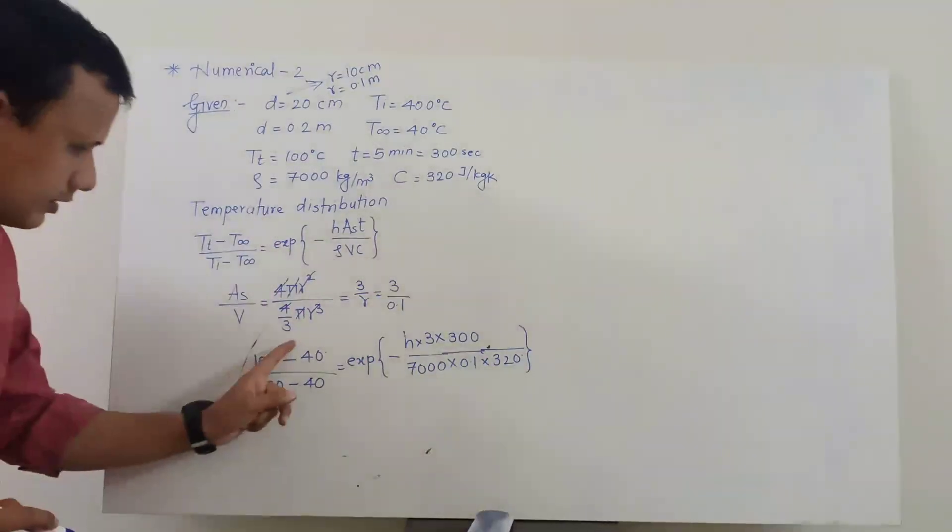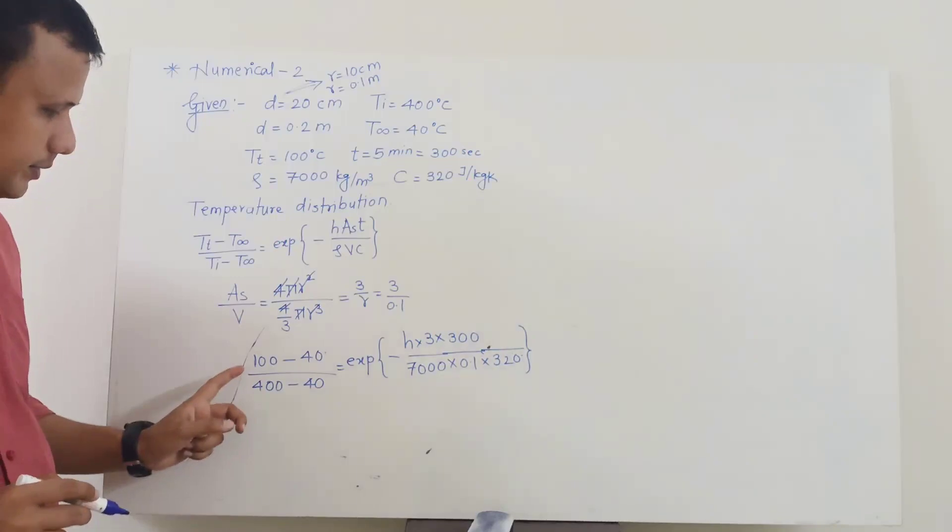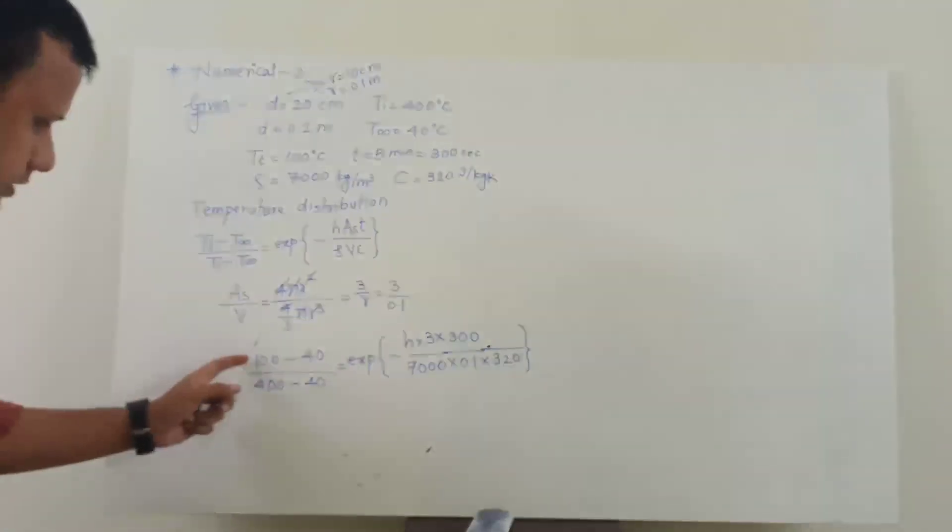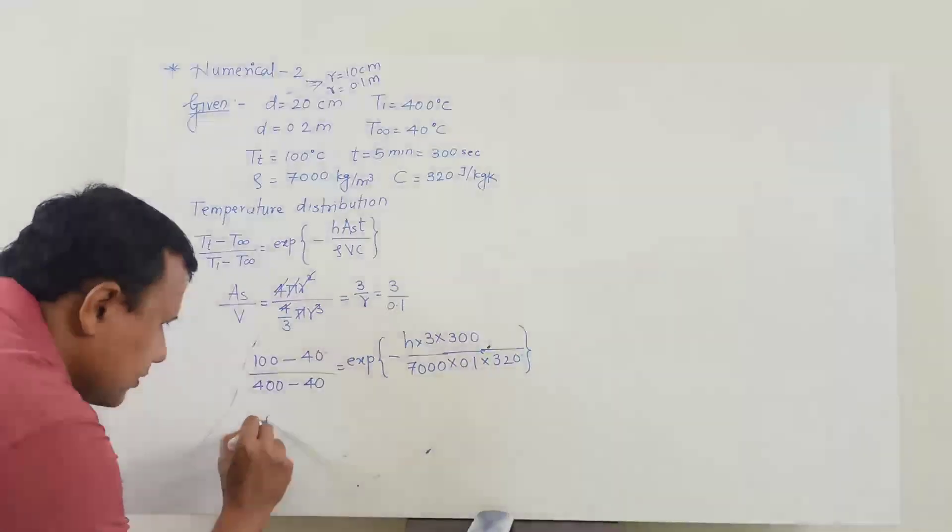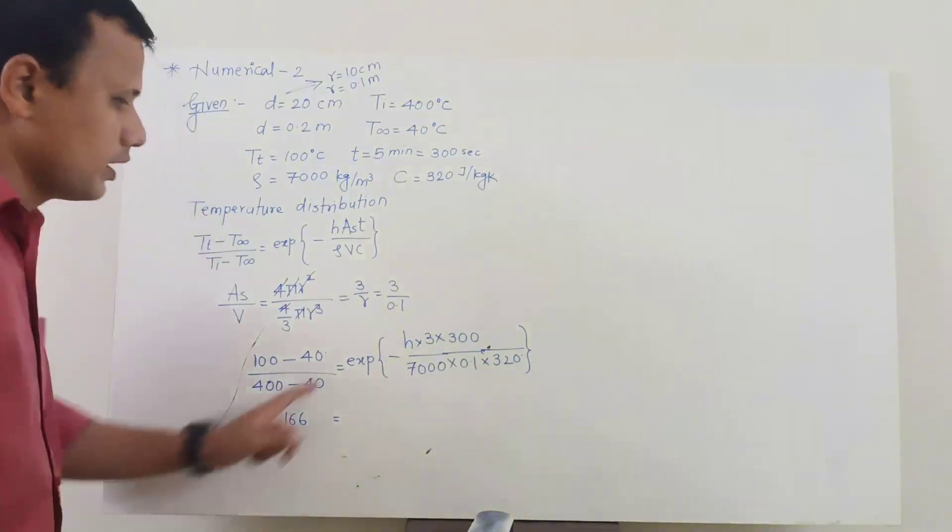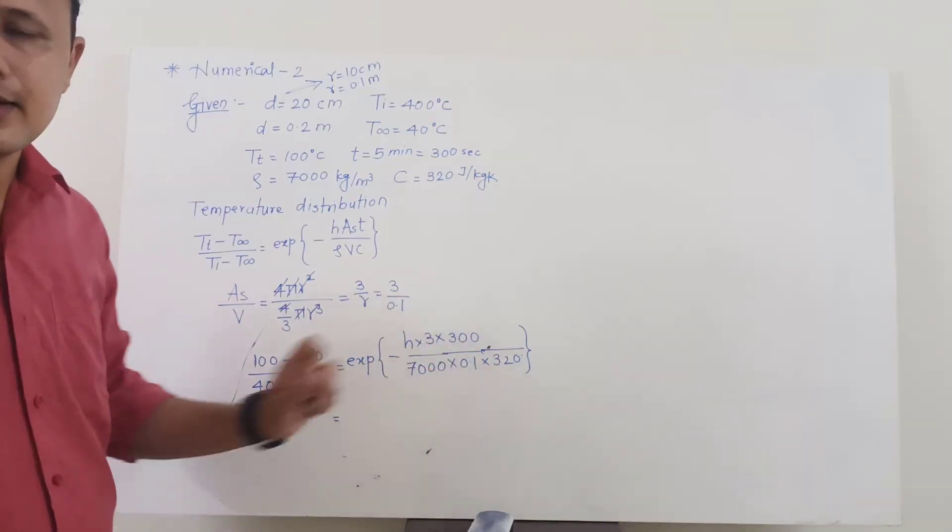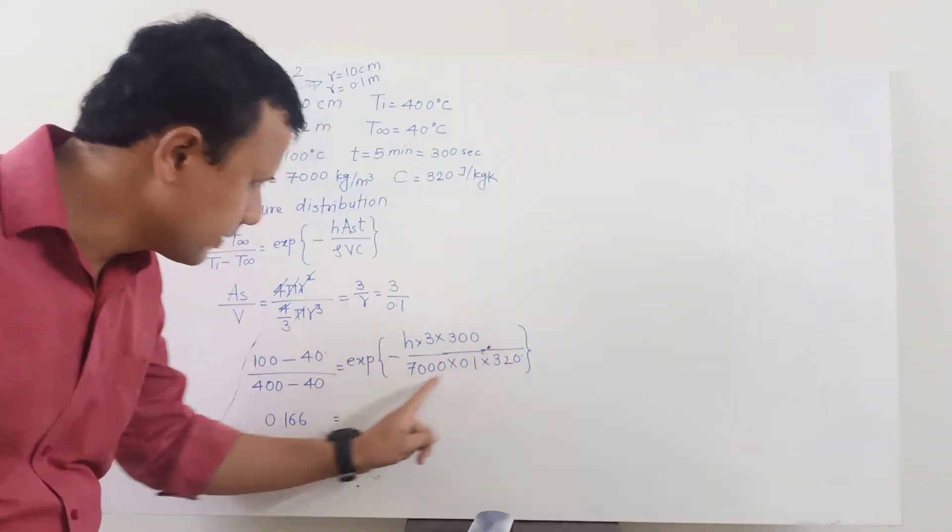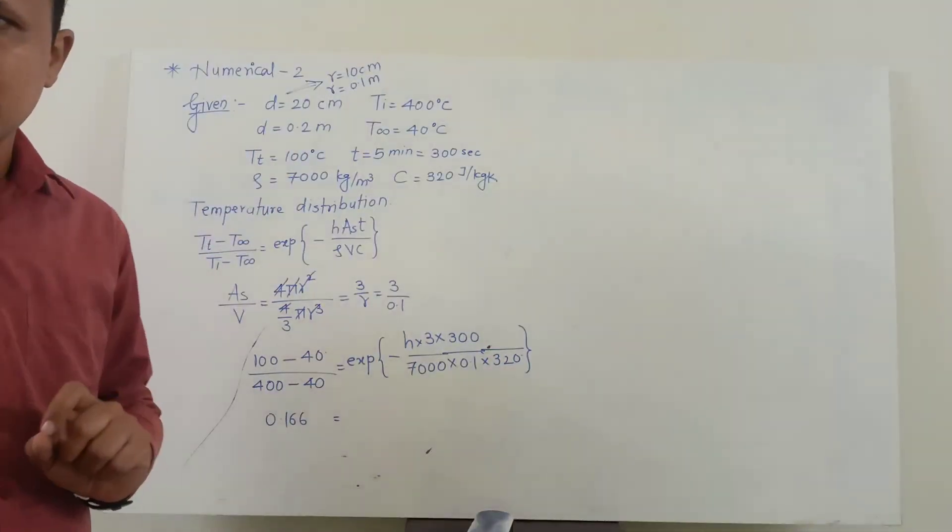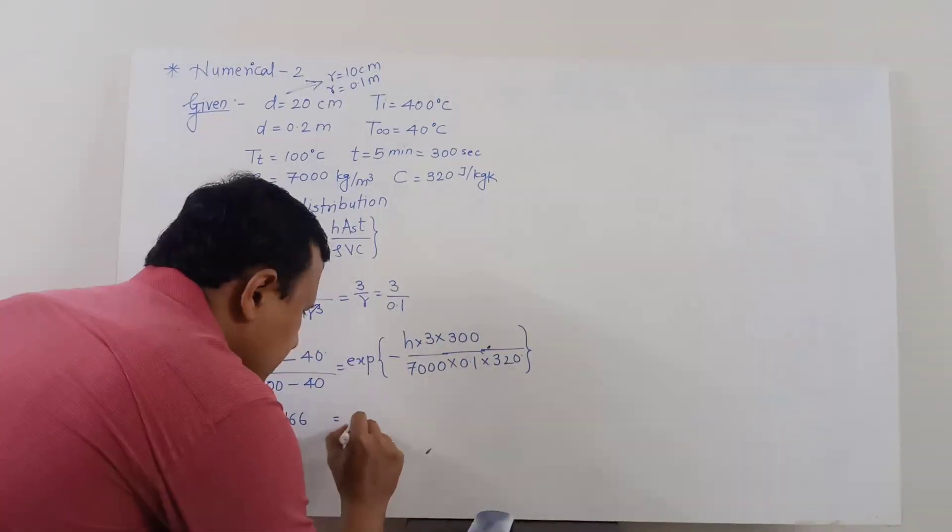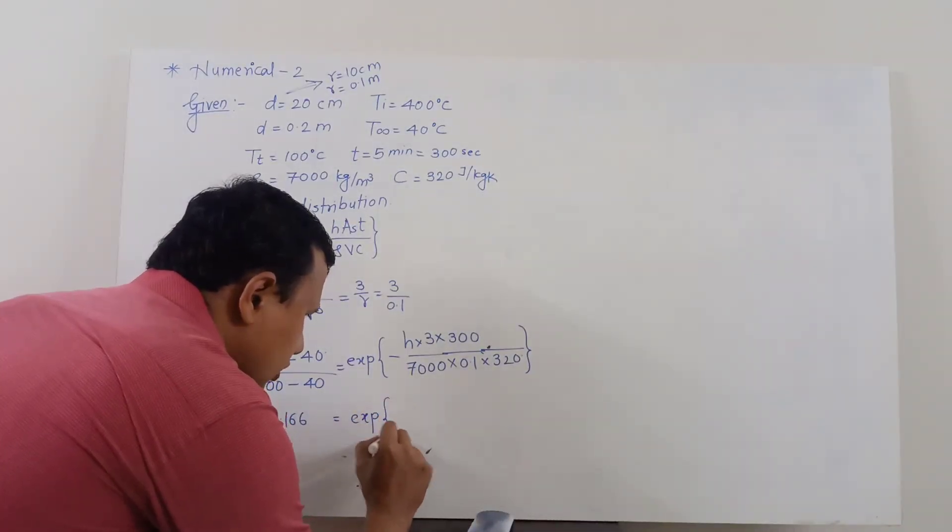So you calculate this particular ratio, it will be 60 divided by 360 and its answer will be, this ratio will be 0.166. It will be equal to exponential of this entire bracket, so that entire bracket except h, this entire bracket will turn out to be 4.0178 into 10 raise to minus 3.